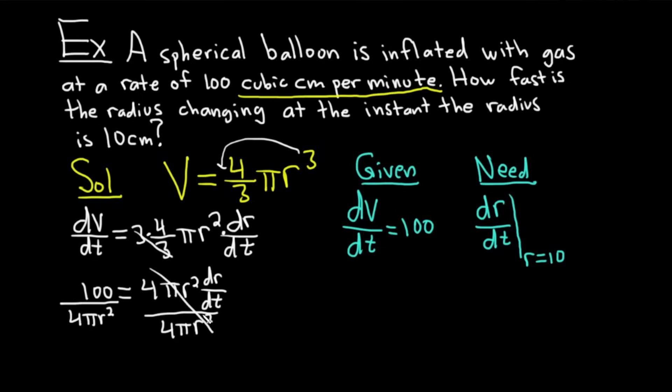So what's that going to give us? These cancel. We end up with dr/dt equal to. And that's just going to be 25 over π r². Because the 100 and the 4 simplify. Now we have to plug in 10.